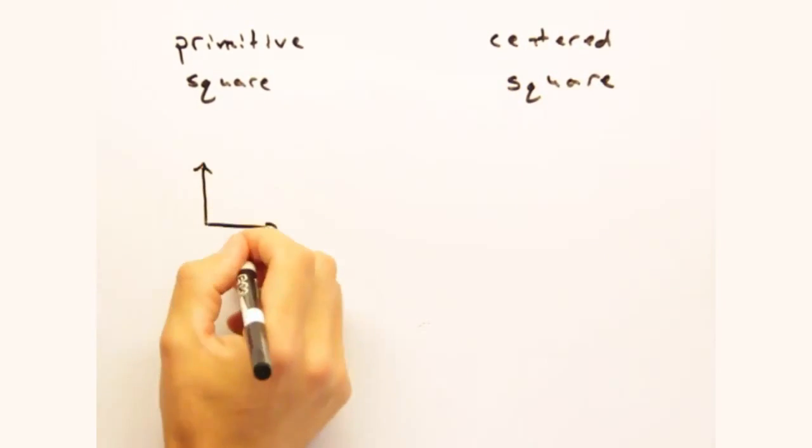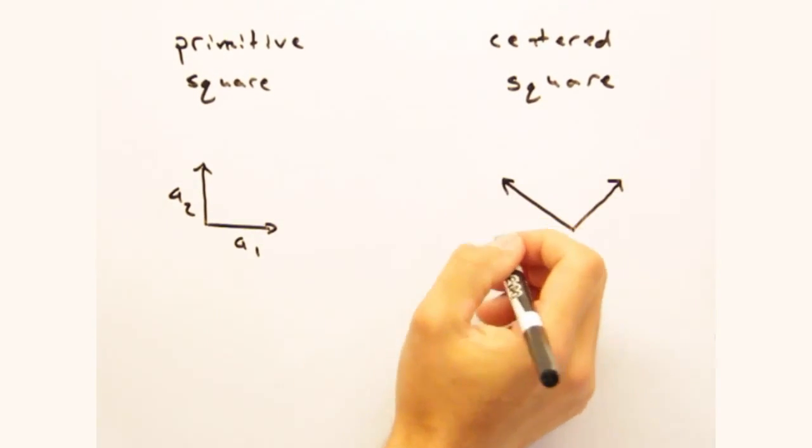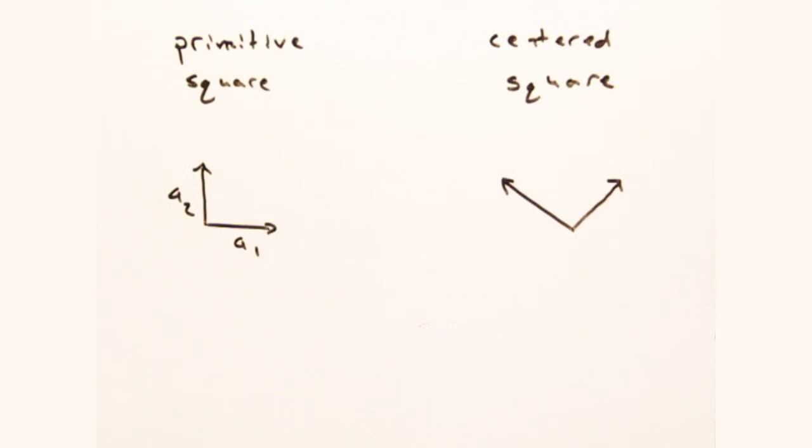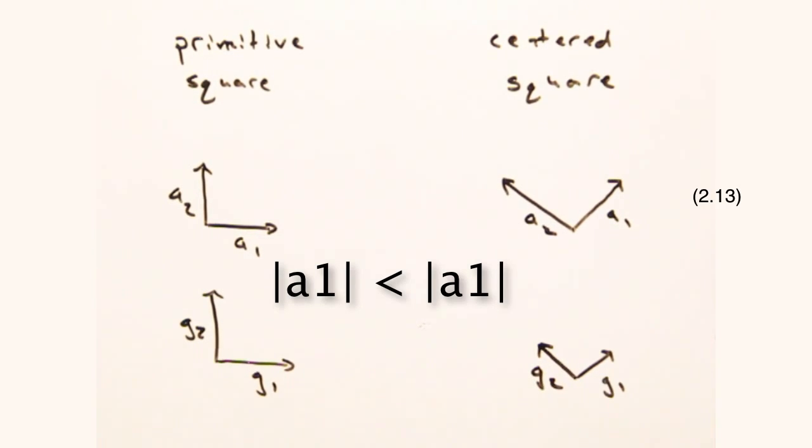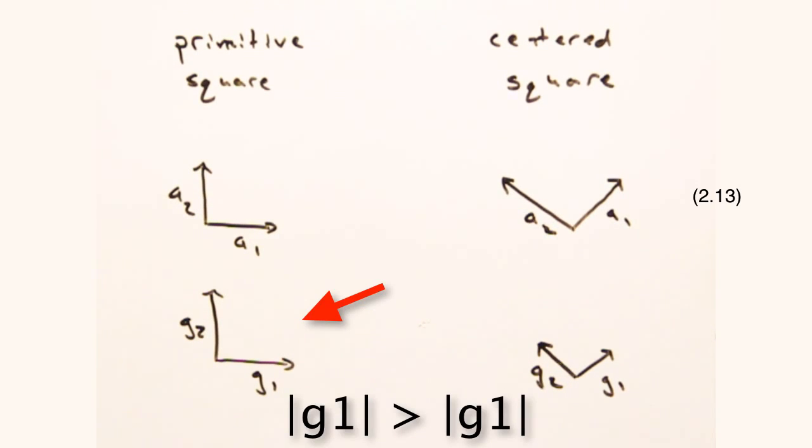On the left we have the primitive square cell and on the right we have the centered square cell. First I'll draw in the reciprocal vectors g1 and g2 for each cell. Because a1 and a2 are relatively small for the square cell, the corresponding g1 and g2 will be bigger than the g1 and g2 for the centered square cell.